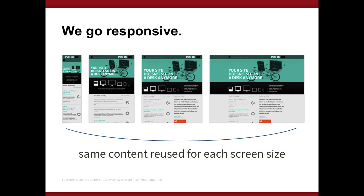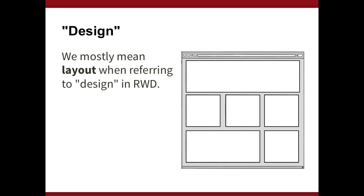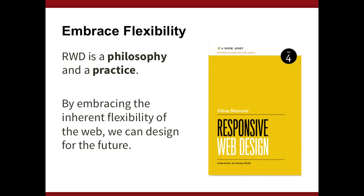Going responsive means using the same content and the same code base for each screen size — a design that responds to the size of the browser or the device. By design here, we're talking mostly about layout, though there are some style shifts too. So there's that single code base, one website, displaying in different ways at different screen sizes. If you haven't read Ethan Marcotte's book, I highly recommend it — it's a quick read.